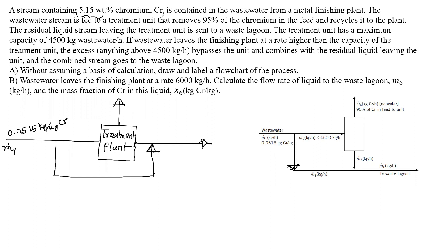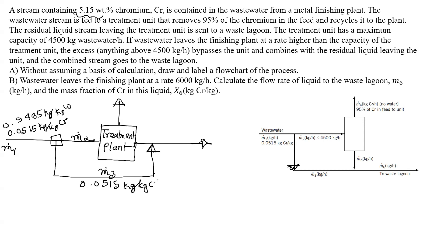The wastewater composition is 0.9485 kg water per kg. I will show the value of M2 and M3. M3 has the same composition as M1: 0.0515 kg chromium per kg, and the rest is wastewater.